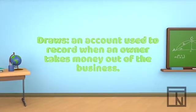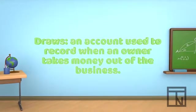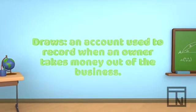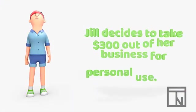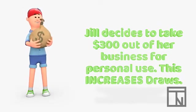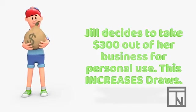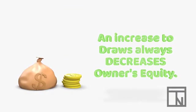The next account in owner's equity for a sole proprietorship is called draws. Draws is used whenever an owner wants to withdraw or take money out of the business. So, if Jill decided to take $300 out of her business funds for her own personal use, this would increase draws as part of that transaction. Because draws is an owner taking their share of the money out of the business, this reduces owner's equity.